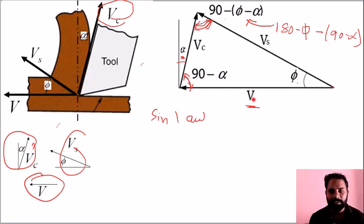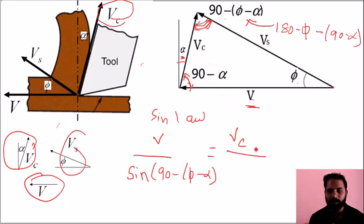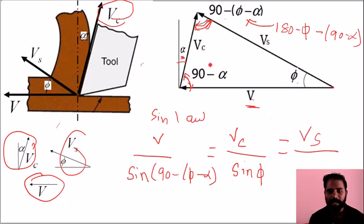Applying the sine rule to the velocity triangle: cutting velocity V divided by sin of the opposite angle (90 minus phi minus alpha) equals chip velocity Vc divided by sin phi, and equals shear velocity Vs divided by sin of (90 minus alpha).